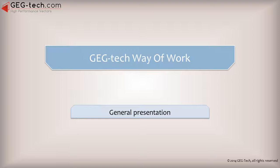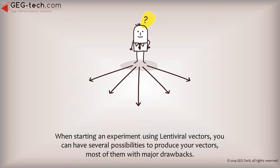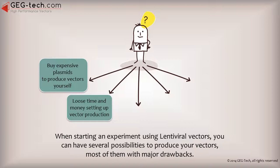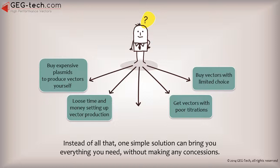When starting an experiment using lentiviral vectors, you can face several possibilities to produce your vectors, most of them with major drawbacks — like buying expensive plasmids to produce vectors yourself, causing a loss of time and budget setting up vector production. You can also buy vectors with limited choice and poor titrations. Instead of all that, one simple solution can bring you everything you need without making any concessions. Try GEGTech.com.